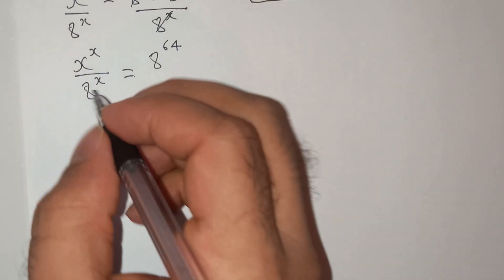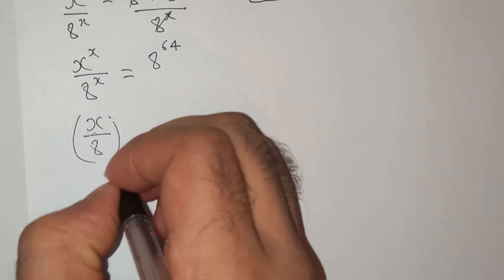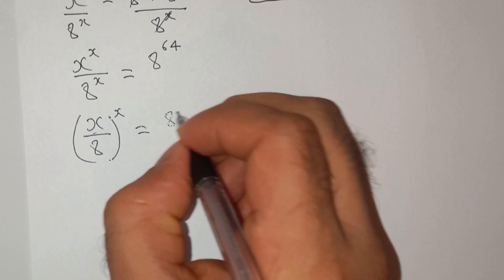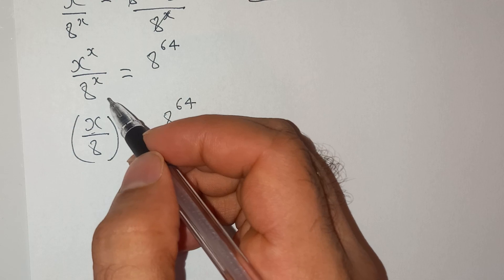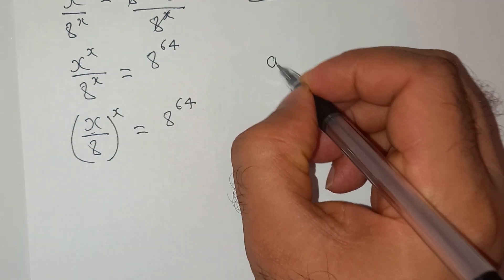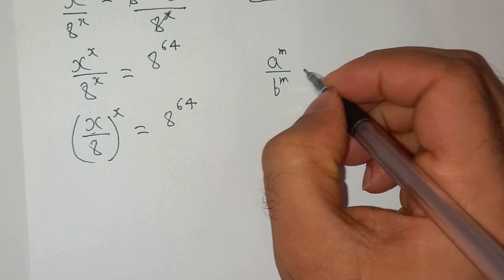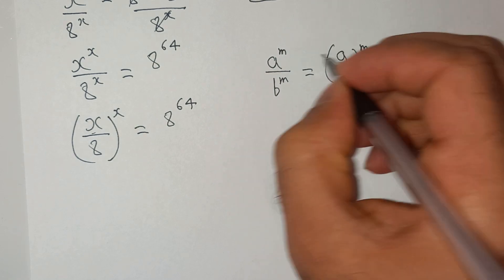So this can be written as x divided by 8 power x equals to 8 power 64. So what I have done is use the exponential formula which is a power m, b power m equals to a divided by b power m.